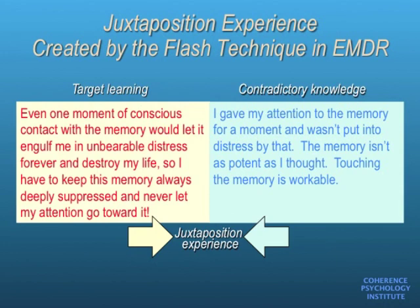And that new learning is then supplied by several more flashes. Flash technique protocol calls for a total of six to twelve flashes, each of which again puts the target learning into juxtaposition with the experiential contradictory recognition: I touched the memory and wasn't harmed by doing that. That knowledge of being unharmed and safe is, of course, bolstered by the dual focus that maintains awareness of being accompanied by the therapist in the therapist's office, in parallel with doing the flashes.